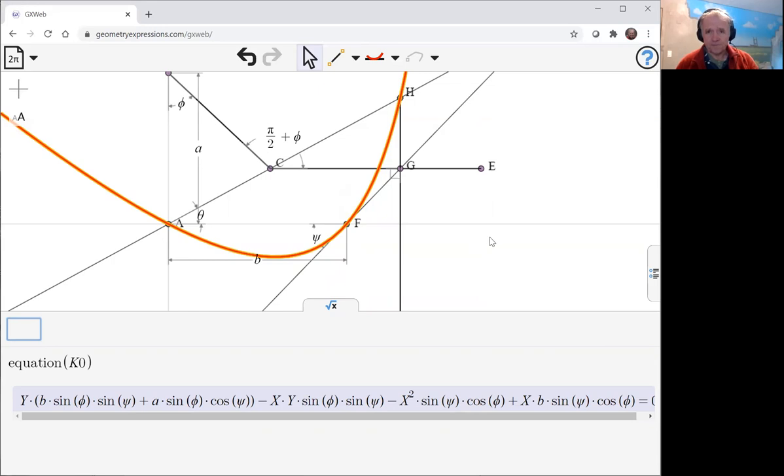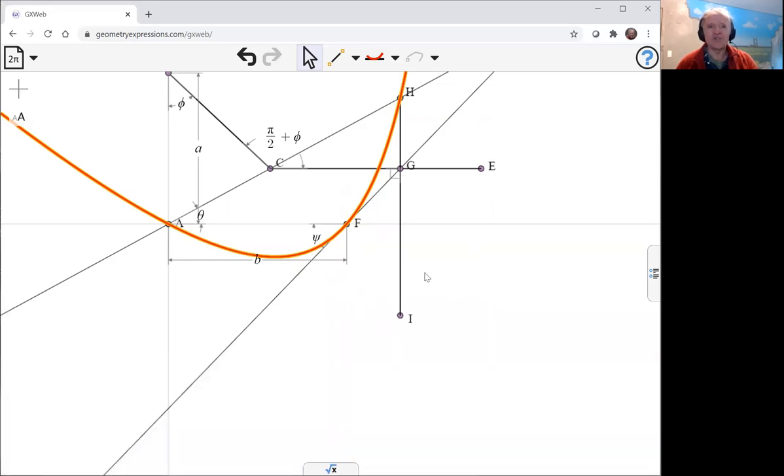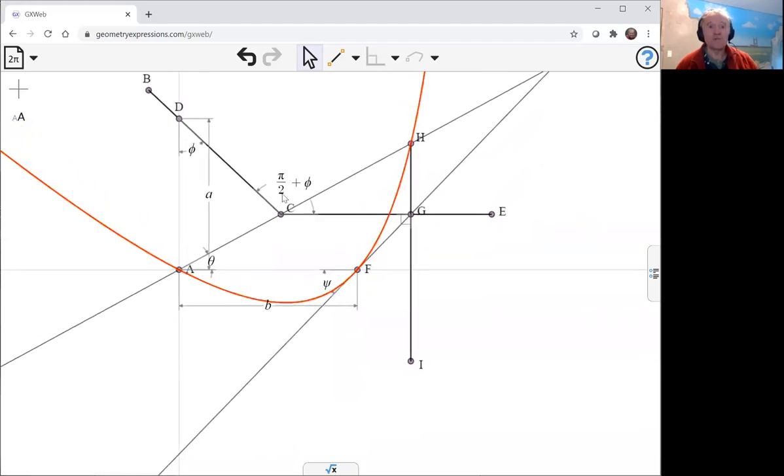So if we wanted a slightly nicer equation, or a slightly simpler equation, we could choose specific values of phi and psi which might make things a bit clearer.